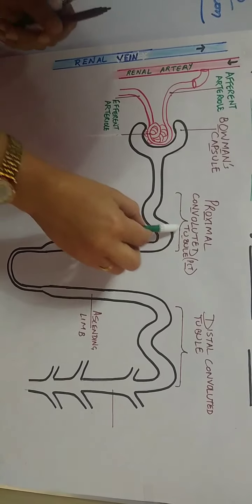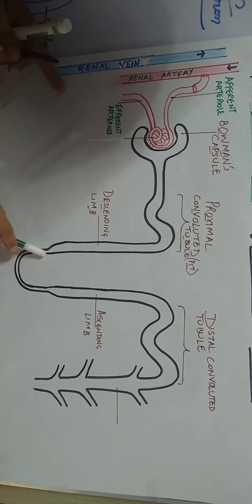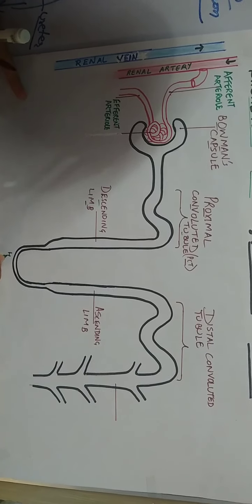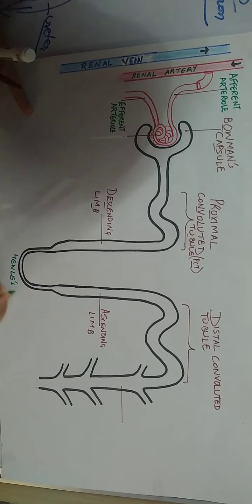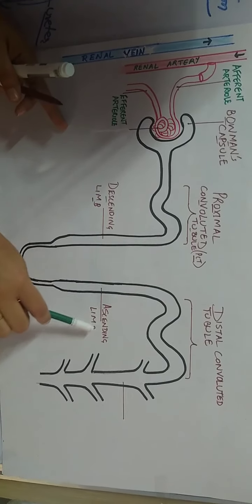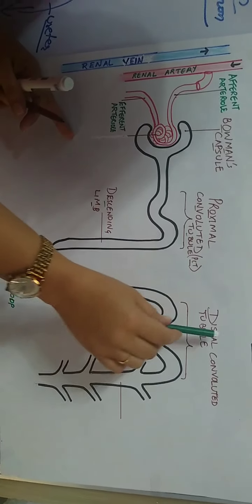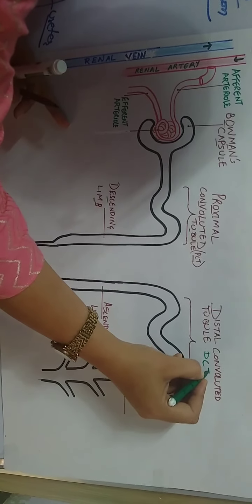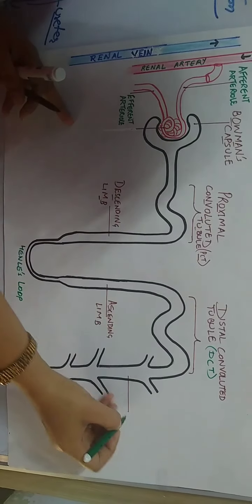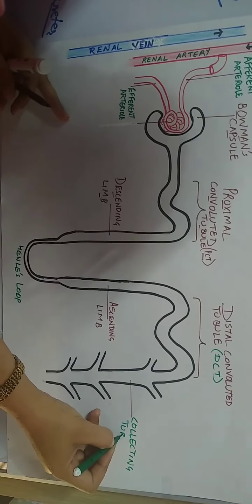Next, the tubule extends downward and this tube is called the descending limb. Then its diameter decreases as it extends further downward, and this portion is called the Loop of Henle, named after the scientist. The Loop of Henle then extends upward, called the ascending limb. The last tubular part of the nephron is called the distal convoluted tubule, or DCT, followed by a common duct structure known as the collecting tubule or collecting duct.